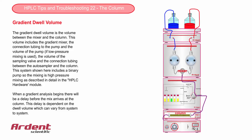The dwell volume is the volume between the mixing chamber of the solvents and the start of the column. This volume is important when doing gradient analysis. For example, if the dwell volume is 1 mL and the flow rate is 1 mL per minute, then it will take 1 minute for the new solvent mix from the mixer to reach the start of the column.